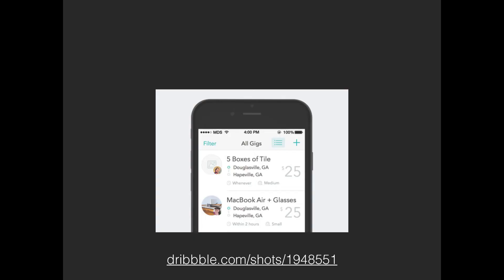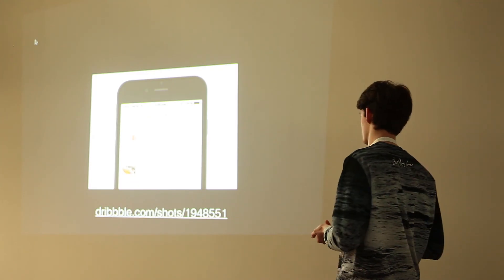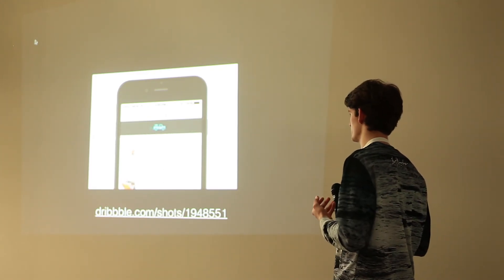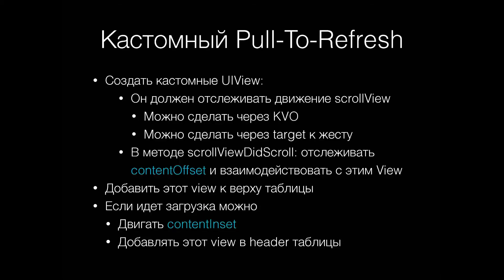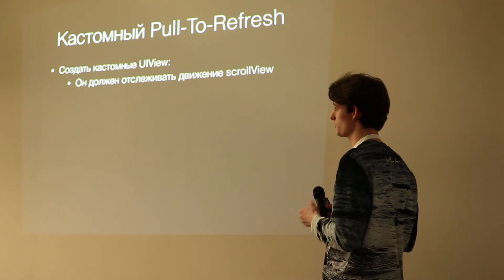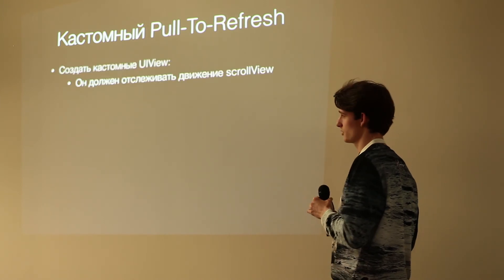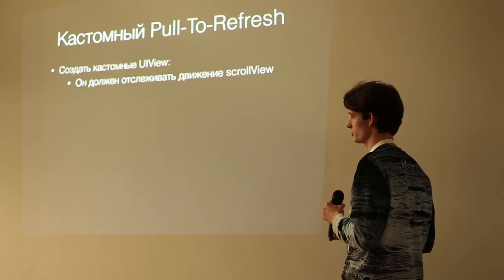Следующий элемент — конечно, кастомный pull to refresh, потому что у нас есть UIRefreshControl, но не всегда хочется видеть refresh таким, каким его видит Apple. Про него скажу немного поверхностно — надеюсь, те, кому надо, осознают. Мы должны создать кастомный UI, который будет выступать нашим pull-to-refresh контроллером. Дальше он должен отслеживать движение scroll view. Можно прицепить его на scroll view, и он узнает свой superview, либо просто туда передать scroll view. Лучше вешать на scroll view, нежели на таблицу, потому что принцип работы будет одинаков для обоих.